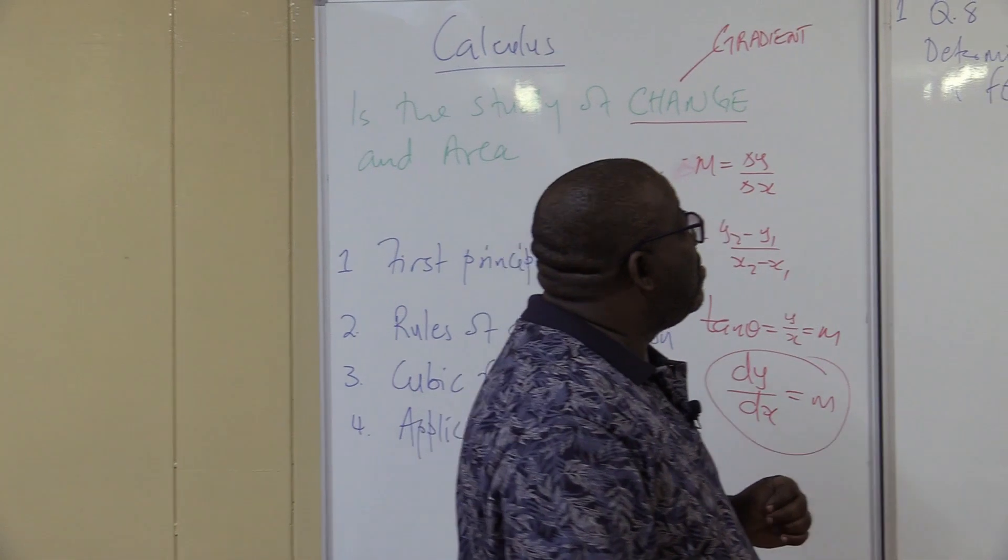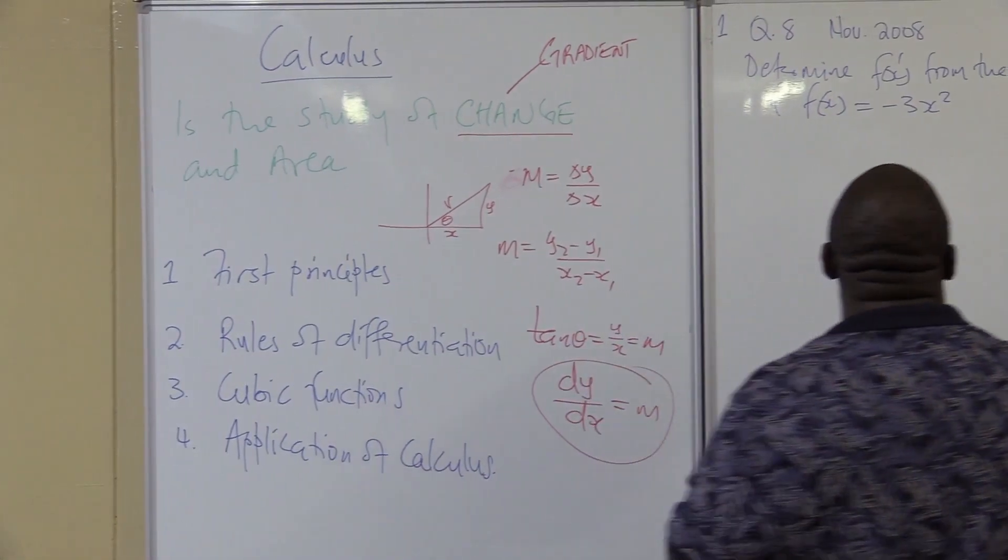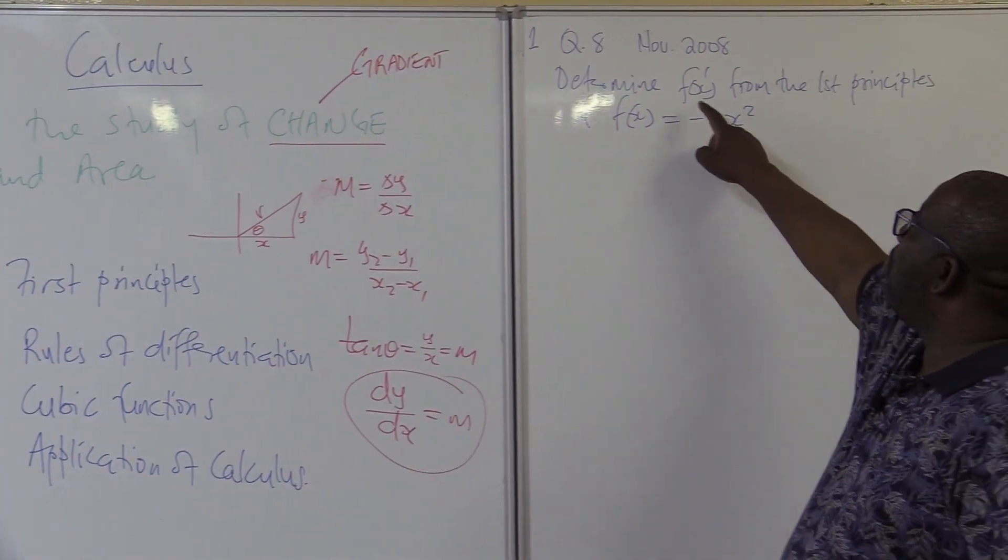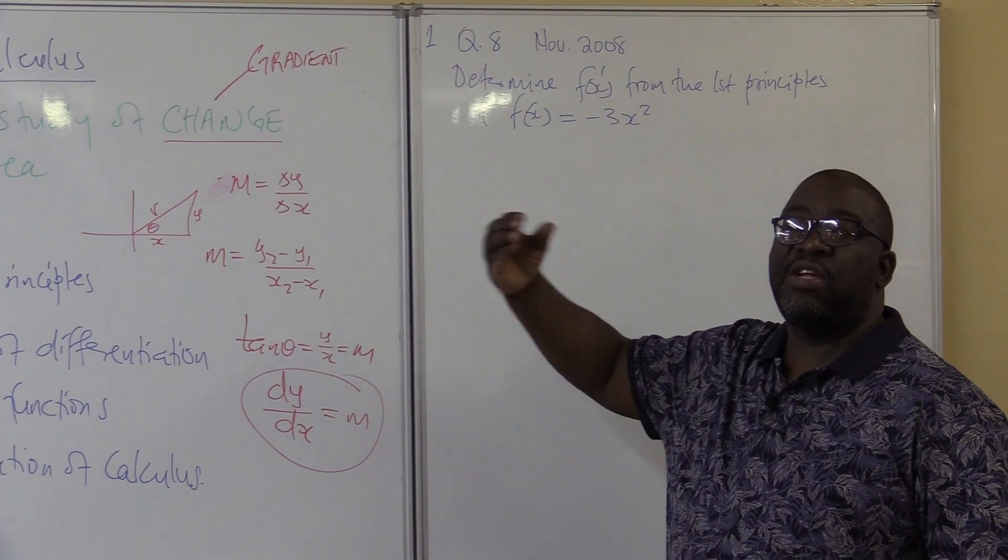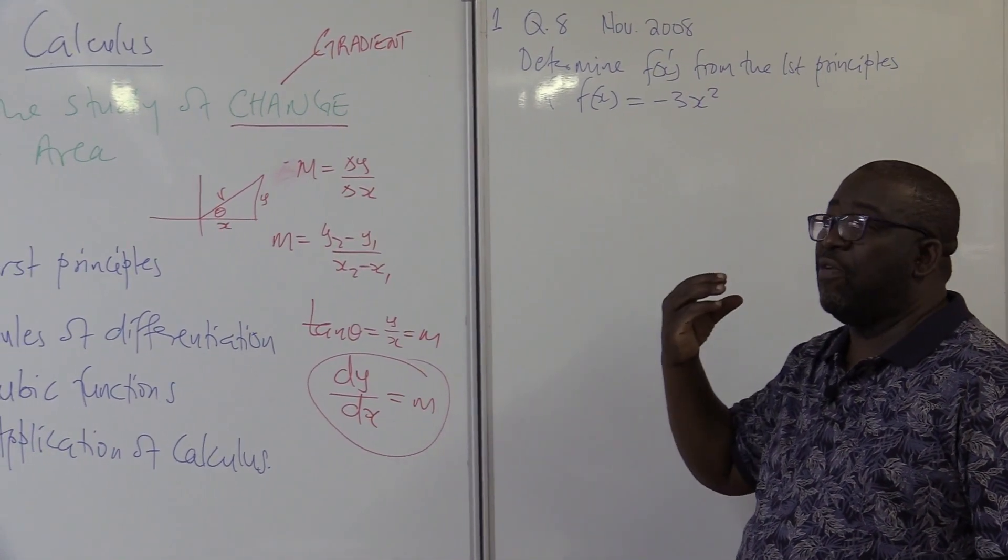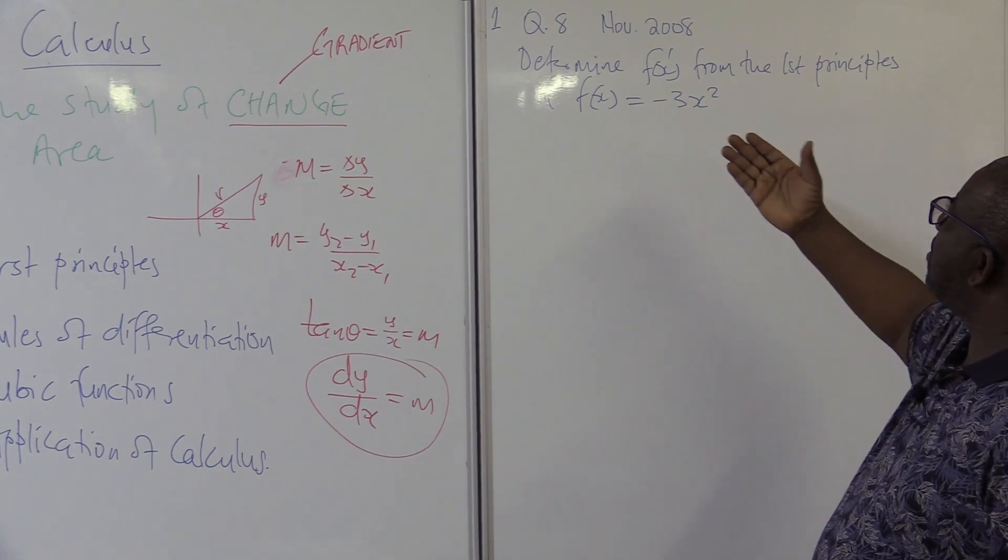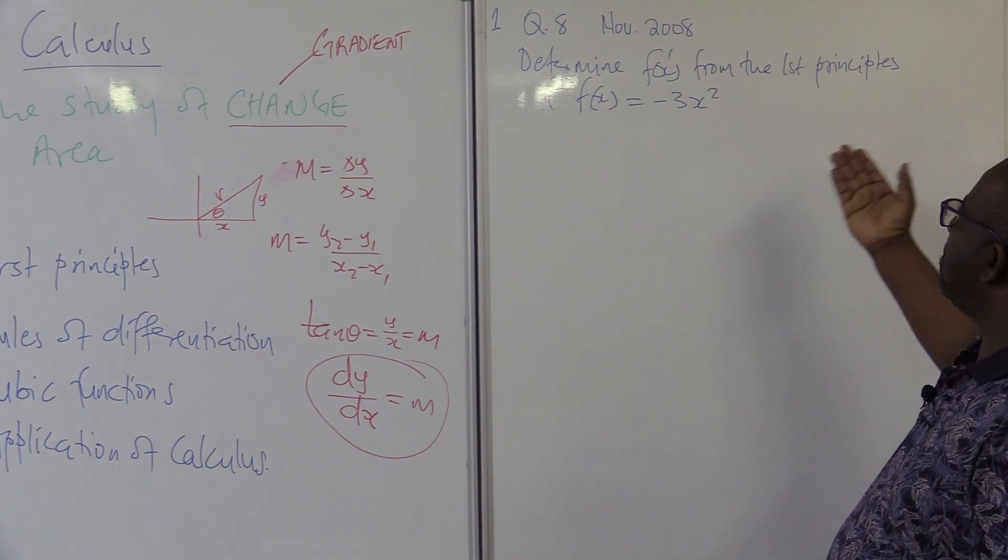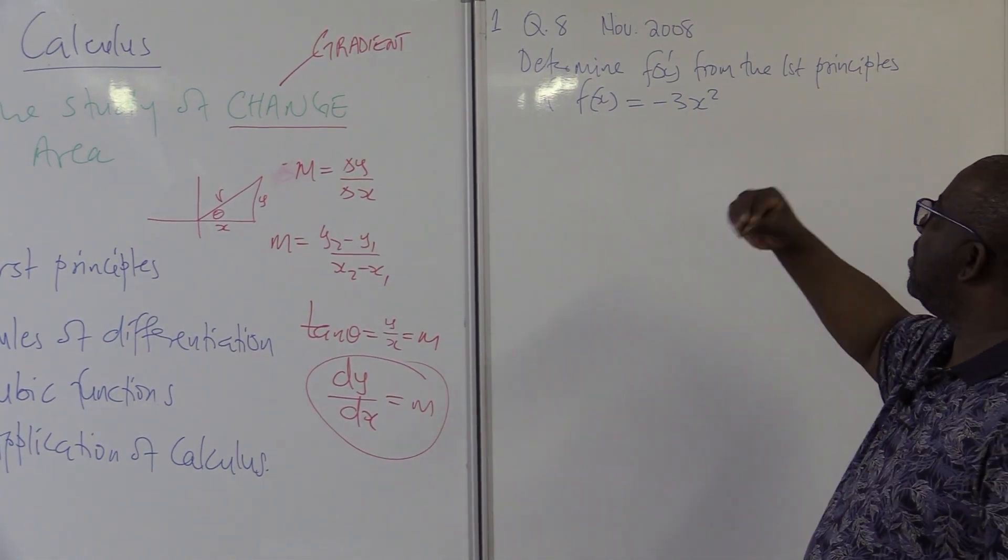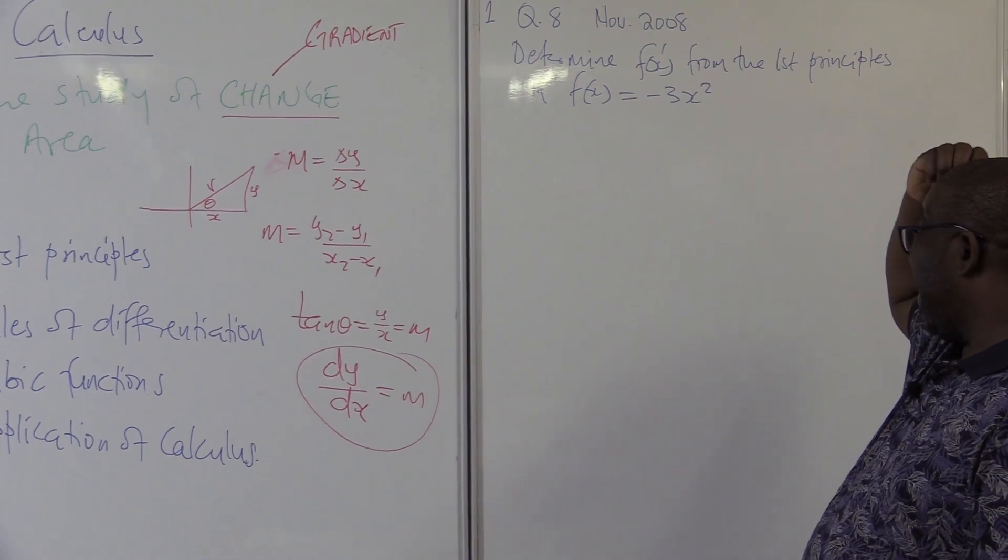This is taken in November 2008. Determine F of X prime. When you say F of X prime, we mean find the derivative or find the average gradient. That's what we're looking for. Determine F of X prime from the first principles if F of X is equals to minus 3X squared.